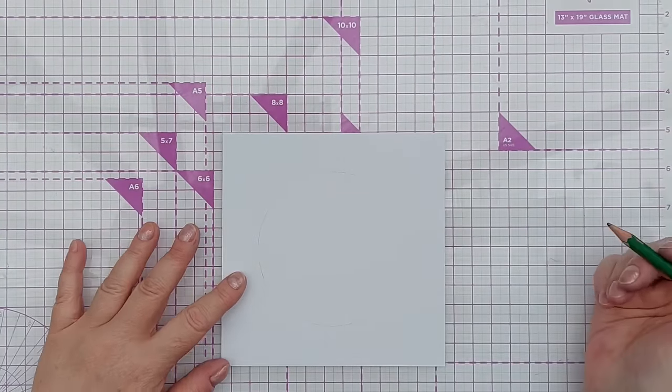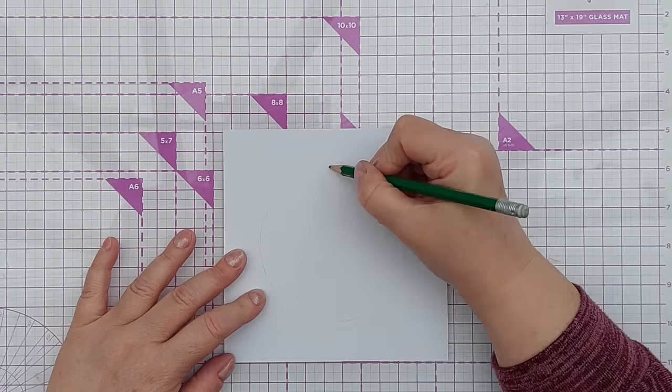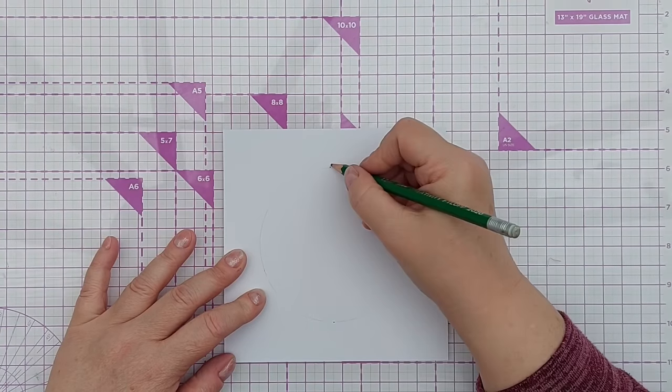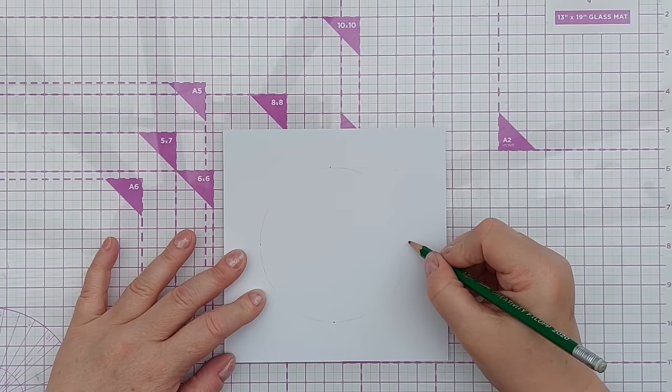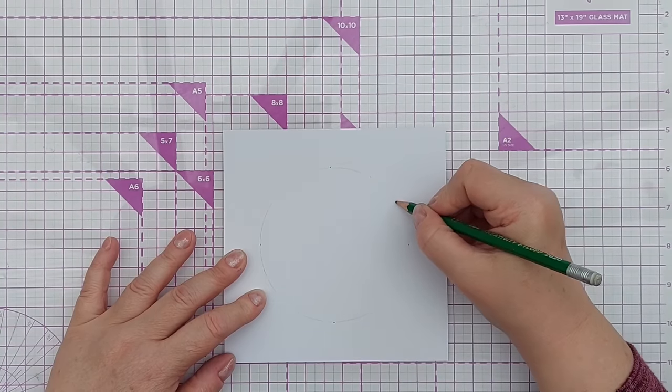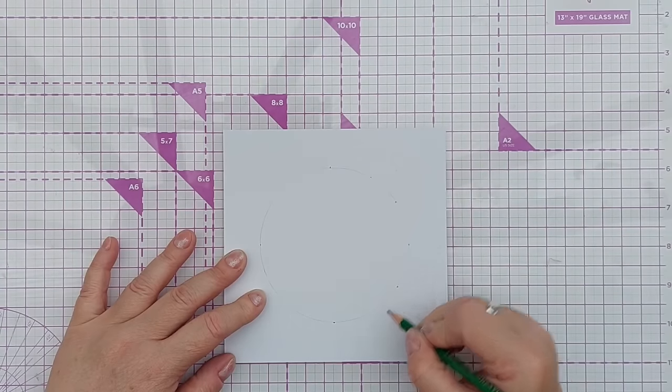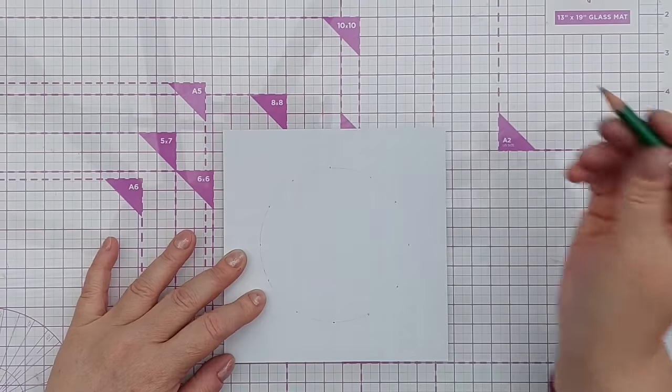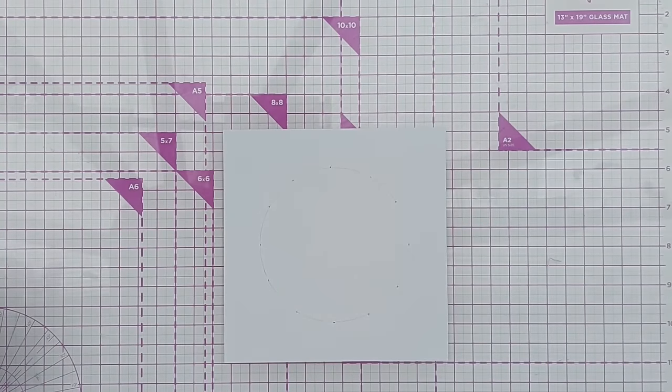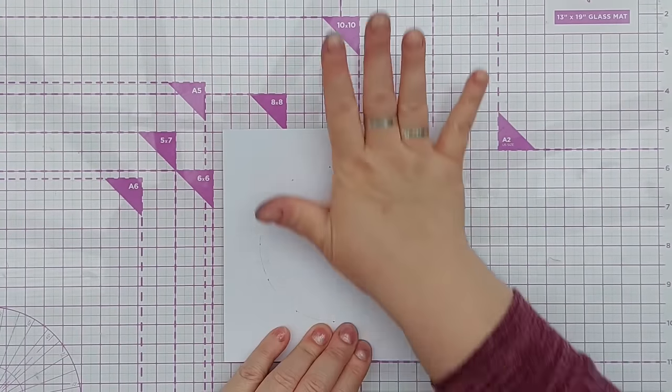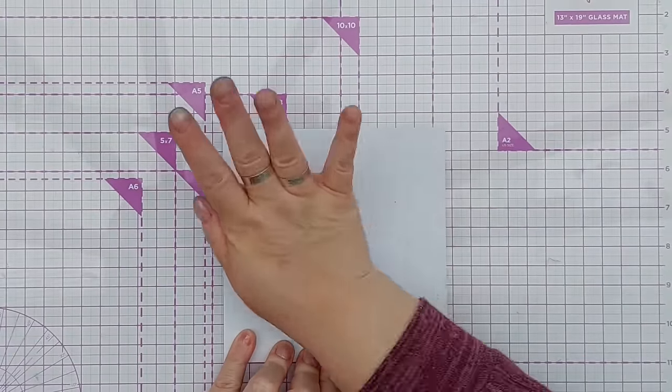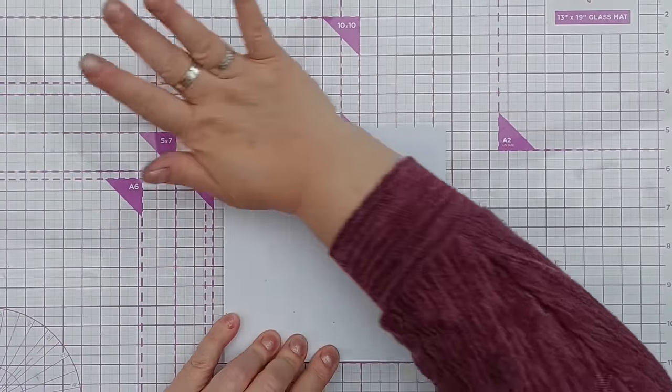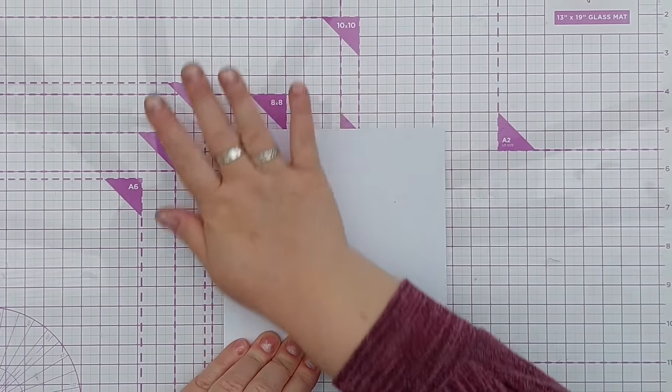I'm going to put my hours of the clock on my 12 spots, so we've got 12 and 6, 9 and 3, and then we can go 1, 2, 4, 5, 7, 8, 10 and 11. They don't have to be exact, it's just a guide. Even though I can rub out through the Catherine Pooler inks, I'm going to use this putty eraser to lighten the pencil marks just to be on the safe side.